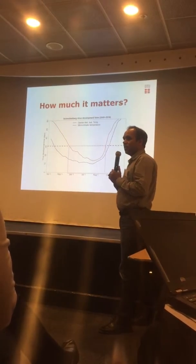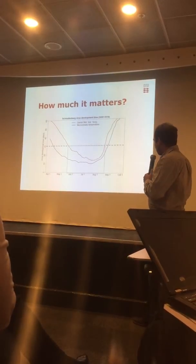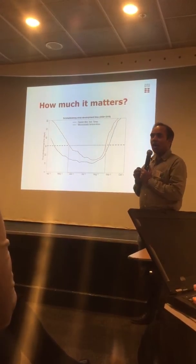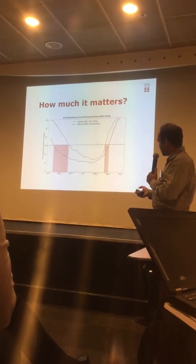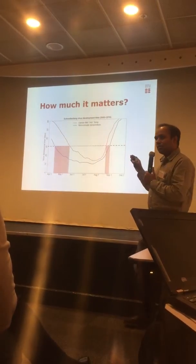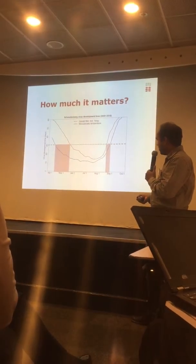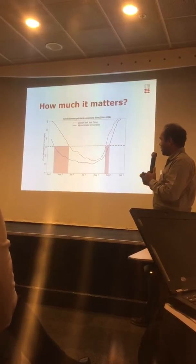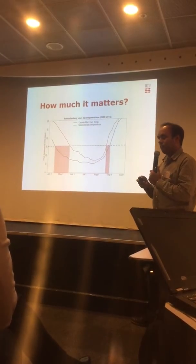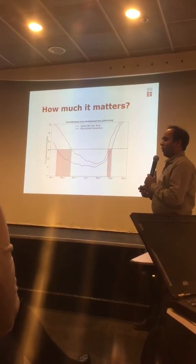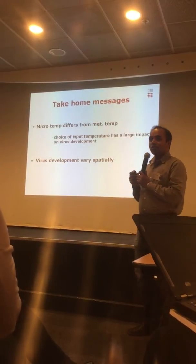But practically, we have seen the Schmallenberg virus in April, in May, and also in September. How is that possible? Now, with the microclimatic temperature, even if the insects survive only 30 days, it shows that virus development is possible even in the middle of April, and it continues 15 days later.